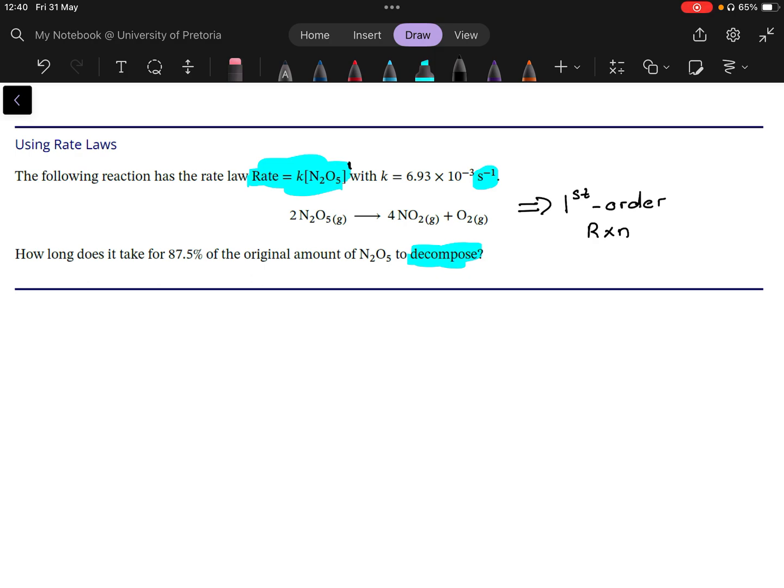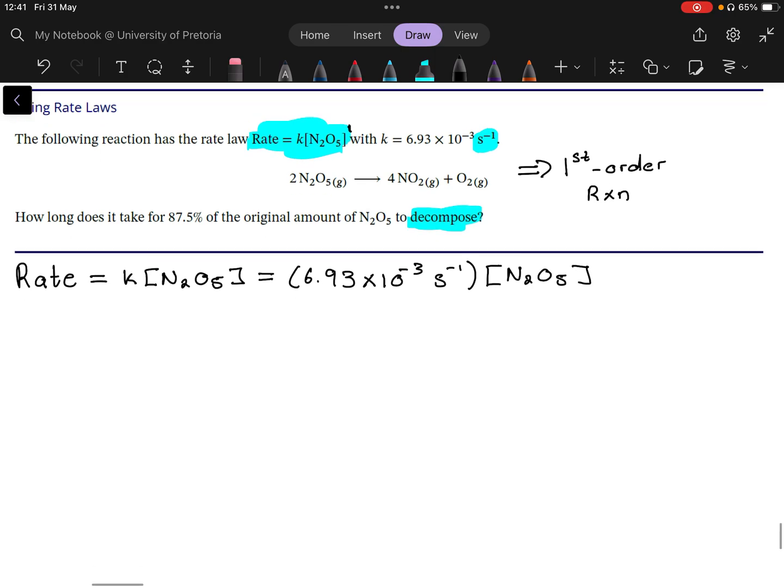So that gives you what kind of integrated rate law you need to be using, what you need to be looking up. So if we broaden the way that we write what we're looking at, we can see that the rate, we're just going to substitute in K is equal to K concentration of N₂O₅, just to get a feel of stuff. That is equal to 6.93 multiplied by 10 to the power minus 3 per second, multiplied by N₂O₅. Alright, first order reaction. We know a lot about this.